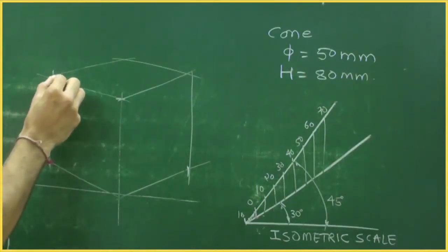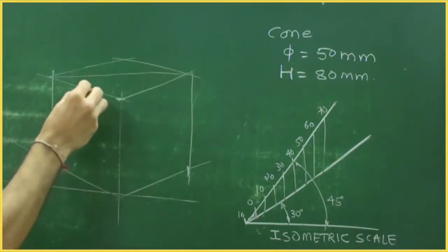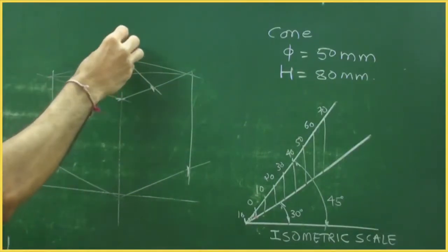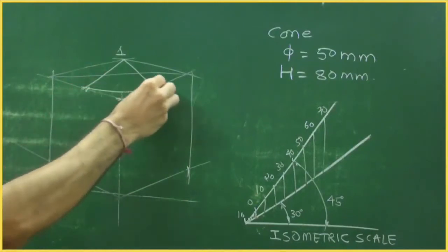What we will draw? First we will draw longest diagonal. Midpoint, midpoint. This is 0.1. So from 0.1 we can draw this curve.